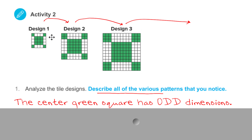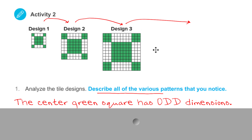I looked at that and I saw three, and then five. So this is three by three, this is five by five, seven by seven. So the center green square has odd dimensions: three, five, seven. Those are all odds. That's a pattern that I noticed.